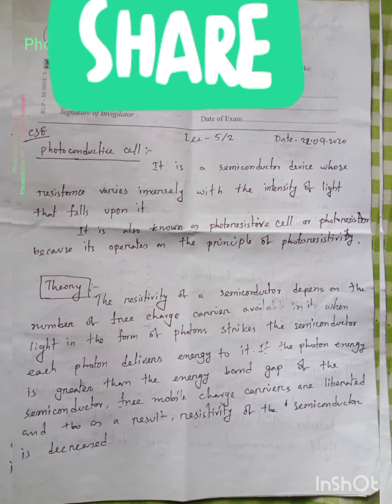The resistivity of a semiconductor depends on the number of free charge carriers available. When light in the form of photons strikes the semiconductor, photons deliver energy to it. The semiconductor's immobile charge carriers are liberated and as a result resistivity of the semiconductor is decreased.